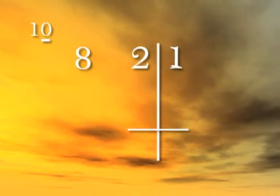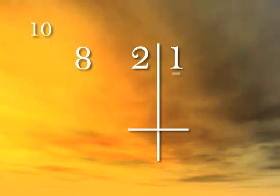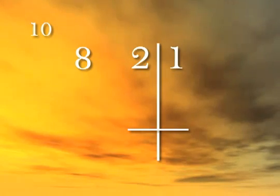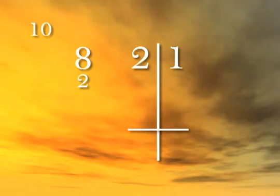Using base division, divide twenty-one by eight. Eight is close to ten, so we'll use ten as our base. Our base has one zero, so we'll separate out one digit on the right side. Eight is two less than ten, so write two just under the eight.